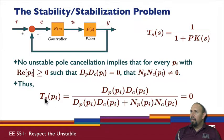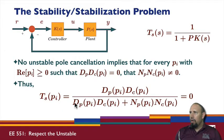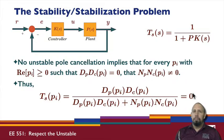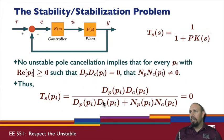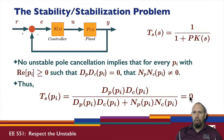If we evaluate the sensitivity function at pi — replacing s with pi — notice that because of the pole at pi, the numerator term involving PC becomes zero. The denominator has this zero and the remaining term is non-zero, so the numerator is zero and the denominator is non-zero, giving an overall result of zero. This tells us that if the open-loop transfer function — including both the plant and the controller — has a pole in the right half plane, the sensitivity function evaluated at that unstable pole equals zero.